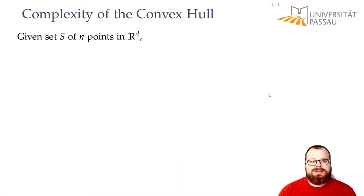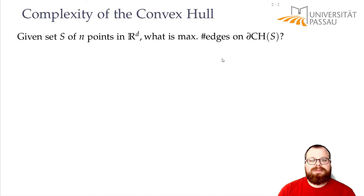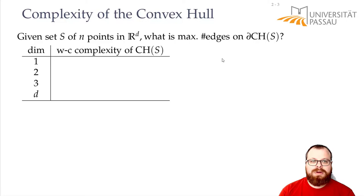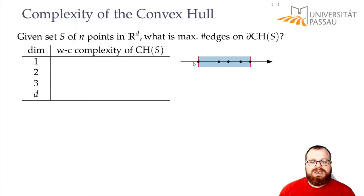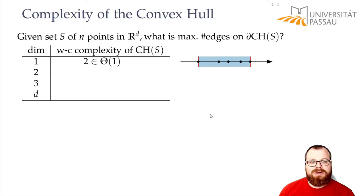Before we do that, we first want to look at the complexity of the convex hull. So let's say we have a set of n points in d dimensions. What is the maximum number of edges on the boundary of the convex hull? If we only have one dimension, we just have a set of points that lie on a line, and then the convex hull is just the minimum and the maximum coordinate. So here the complexity is 2, which means it is theta of 1 — it's a constant.